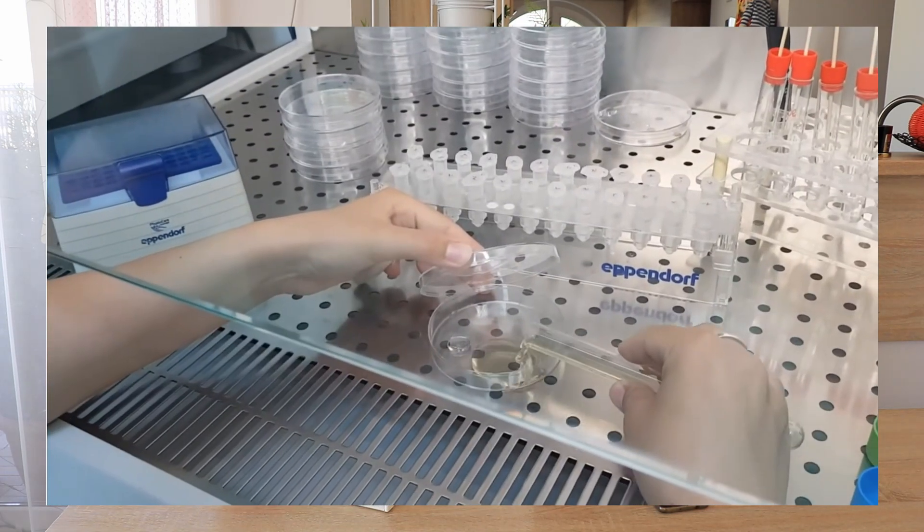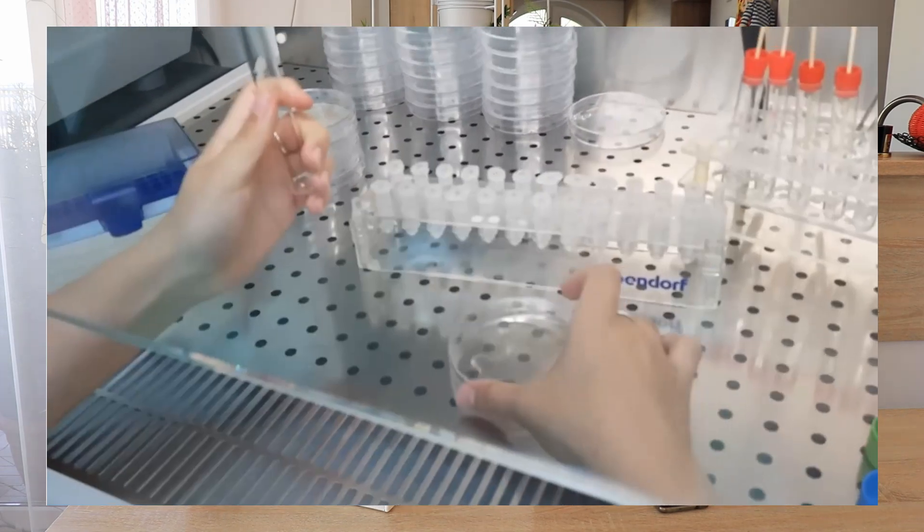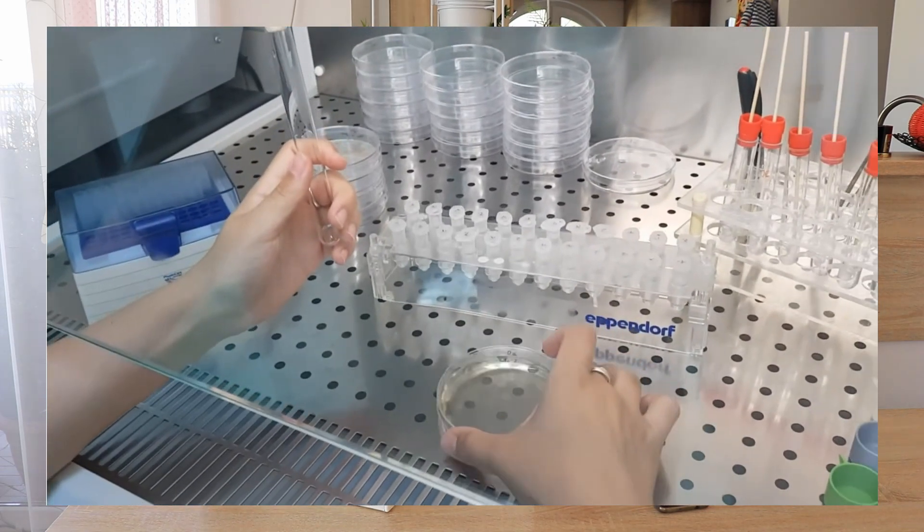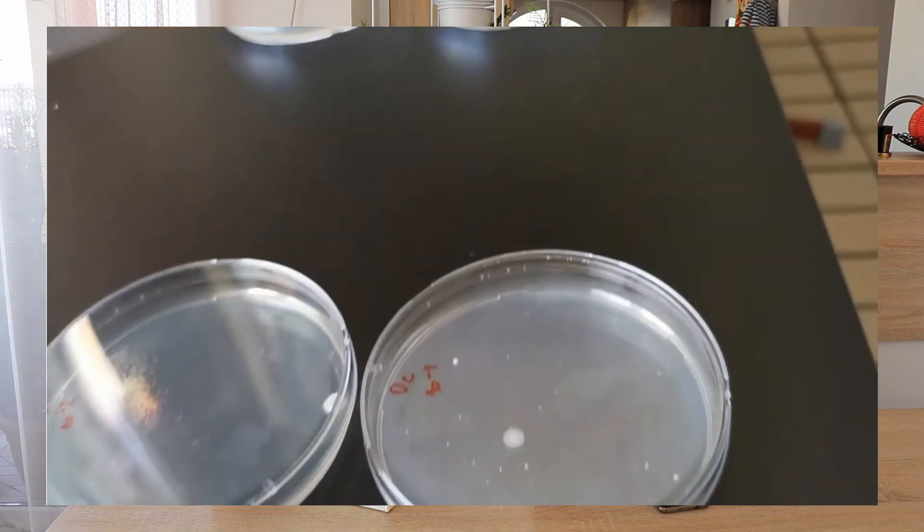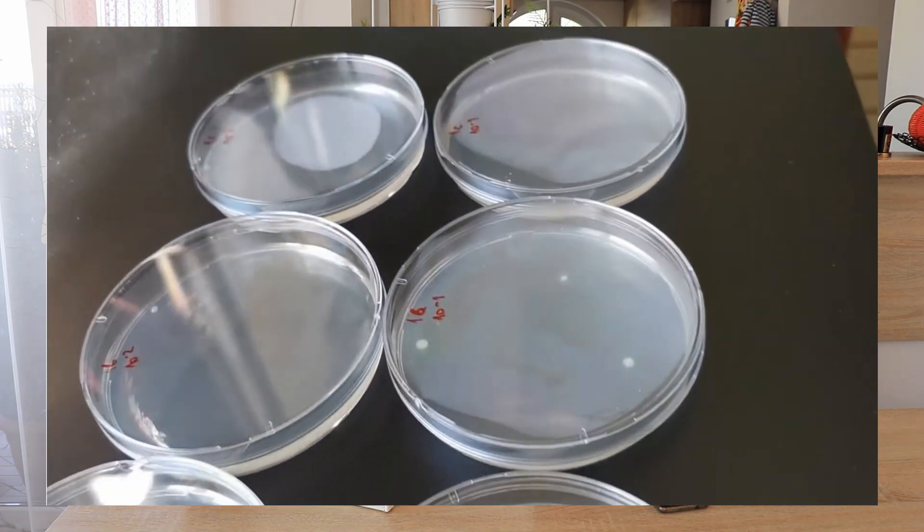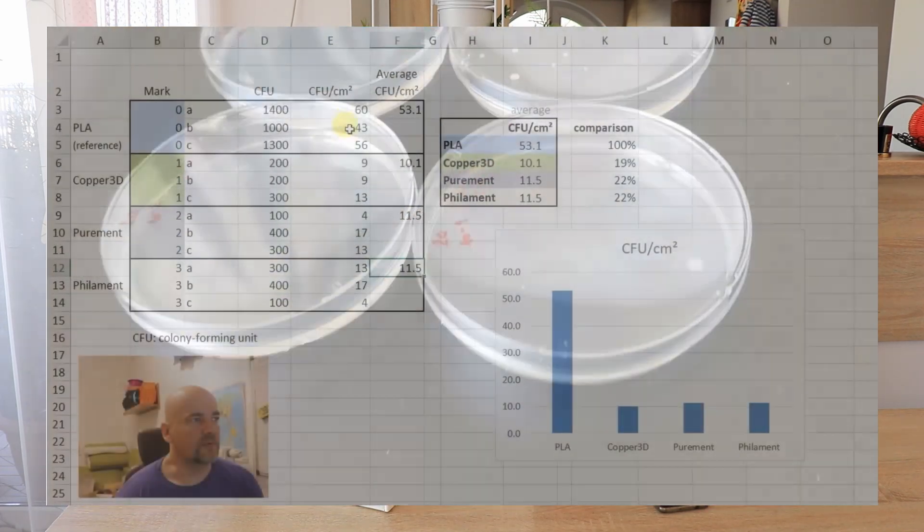The result of that video is that the metallic ions which are added to those PLA antibacterial filaments will reduce the bacterial colonies to one-fourth or one-fifth.